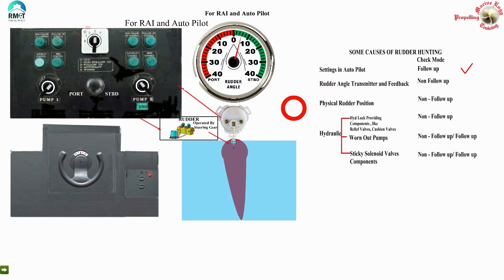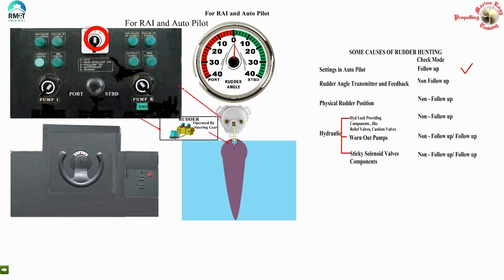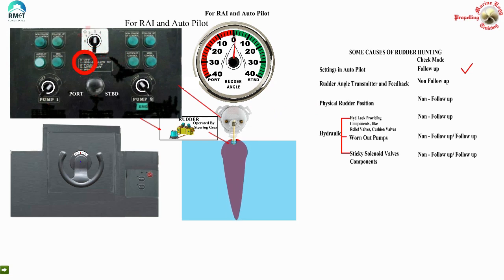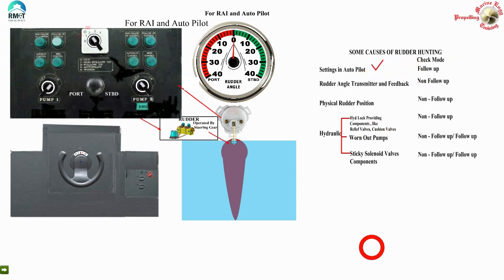First cause: settings in the autopilot. If the autopilot is suspected as the source of trouble, common sense tells us to keep it out of the system and have a look. So I change over from autopilot to follow-up mode - position 2. You see the rudder has stopped hunting. As soon as the autopilot is out of the picture, the rudder stops hunting. So we have confirmed that our suspicion of the autopilot is correct - that is the cause.